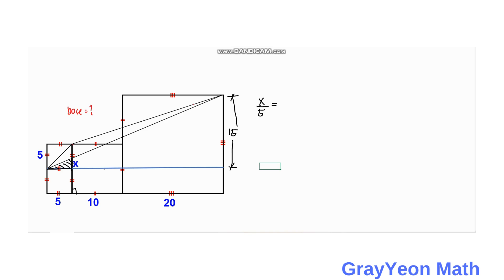So x is equal to 15 times 5 over 35. This becomes 1 over 7, and x equals 15 over 7.